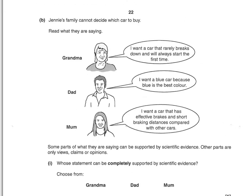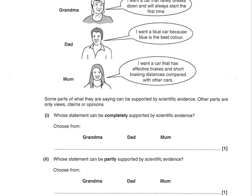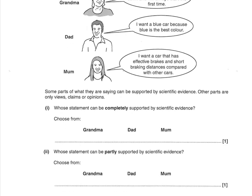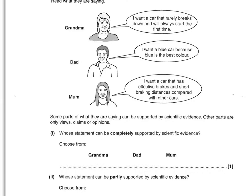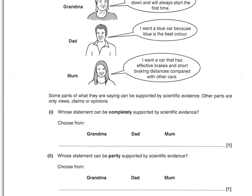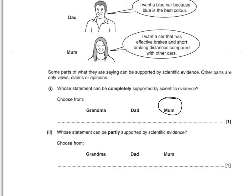Jenny's family can't decide which car to buy. Grandma wants a car that rarely breaks down and always starts first time. Dad just wants the blue car. Mum wants a car with effective brakes and short braking distances compared to other cars. Whose statement can be completely supported by scientific evidence? Mum's, because you can test braking distances. Grandma's is only partly supported — you can check whether cars start first time, but you can't easily verify they rarely break down. Colour preference is not scientific at all.